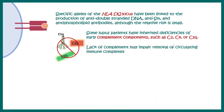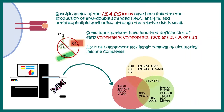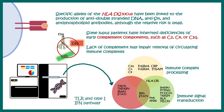Lack of complement system may impair the removal of circulating immune complexes. Complement systems are really important to clear up immune complexes. Genetic sequencing has found that many genes can be considered risk factor genes of systemic lupus, and all of these genes belong to categories like immune complex processing, immune signal transduction, and TLR type 1 interferon pathway-related genes.